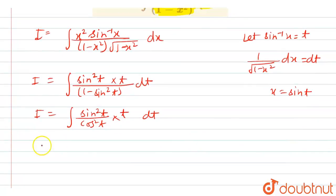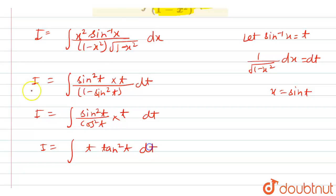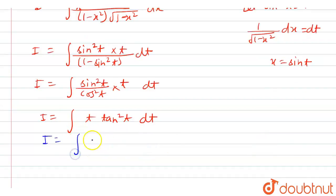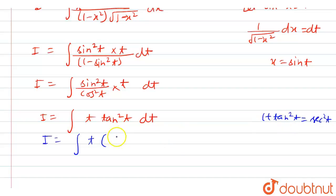From here, i is equal to the integration of t tan squared t dt. Now, we know that 1 plus tan squared t is equal to sec squared t. So from here, tan squared t is equal to sec squared t minus 1.